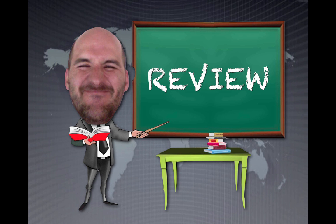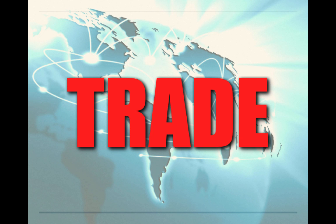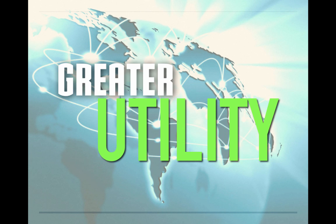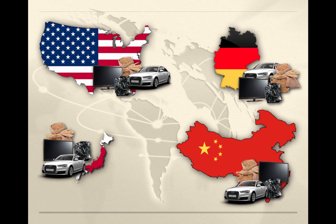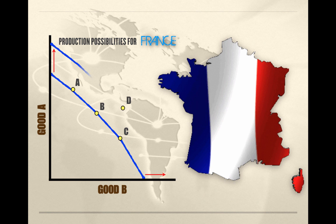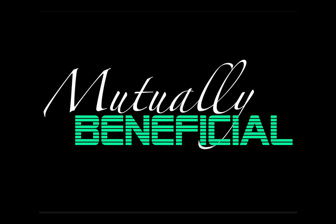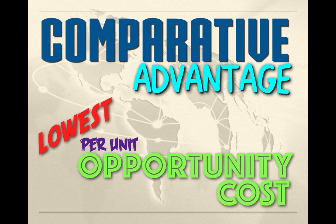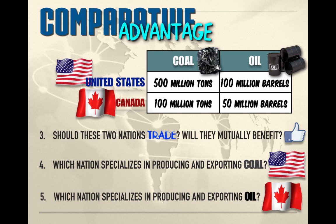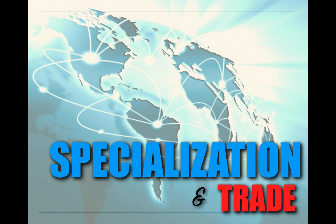Let's do a quick review. Trade is the voluntary exchange of goods and services between two sovereign nations. Benefits of trade include improved diplomatic relations, greater utility through variety and allocative efficiency, and greater output including the ability to shift PPCs outward. Countries will only trade if it's mutually beneficial. A country has an absolute advantage if it can produce more goods or the same amount using fewer inputs. A country has a comparative advantage if it can produce a good at a lower per-unit opportunity cost. If both countries have a comparative advantage in different goods, they should engage in trade, and each country should specialize in producing and exporting that good. Thanks for joining me — see you next time on Intro to Econ.